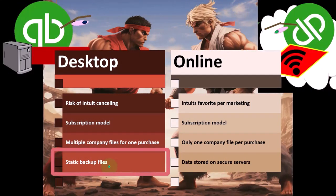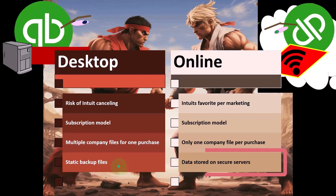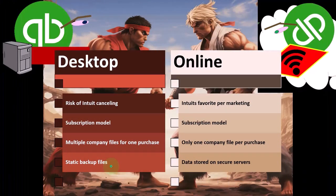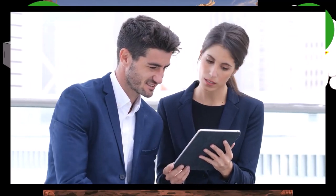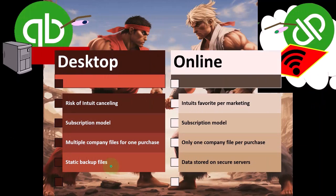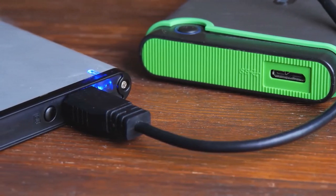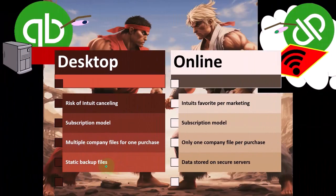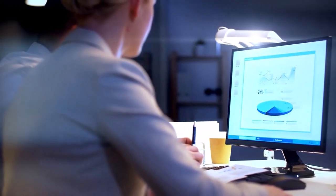That may be true, but the desktop version can still be very secure if you properly do your backups — backing them up to a separate drive or online cloud, not just your hard drive. You can set up automatic backups to a cloud or external drive for a very secure backup system. Another benefit of static backups is that you can make multiple backups, such as nightly backups, which lets you restore to any point you want.